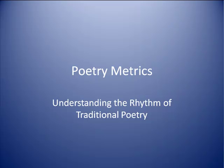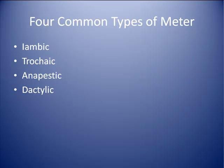Poetry Metrics: Understanding the Rhythm of Traditional Poetry. We have four common types of meter: iambic, trochaic, anapestic, and dactylic. By far the most common is iambic.